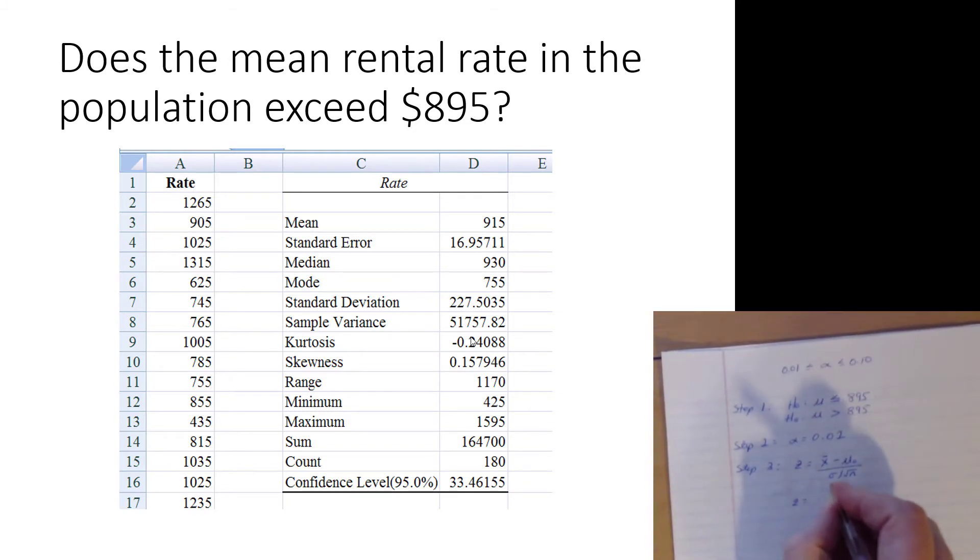Now we're able to use these results to calculate our test statistic. So that z is x̄, what is that, $915, minus μ₀, μ₀ is just the particular value mentioned in the hypothesis, 895, divided by the population standard deviation of 225, which was given to us, divided by the square root of n, looks like we have an n count of 180. Run through the math, and we get a z-score of 1.19257.